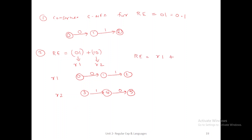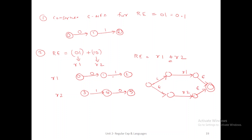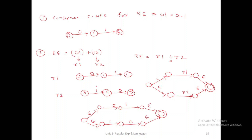RE is nothing but R1 + R2 (union). The starting state goes to the top node (R1) or bottom node (R2) with epsilon. The outputs of R1 and R2 are combined at a final state with epsilon transitions. The state numbers continue as 0, 1, 2, 3, 4, 5, 6, 7.